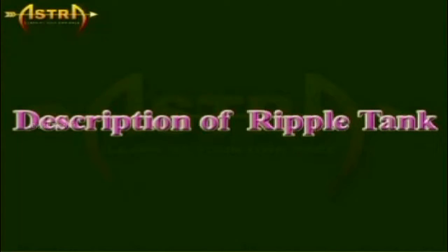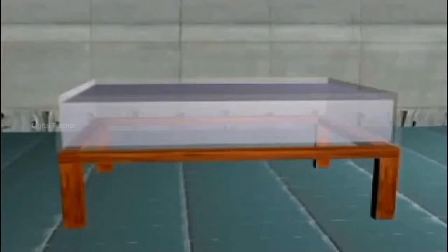Now let's see what a ripple tank is. A ripple tank essentially consists of a rectangular shaped trough made of transparent glass or perspex material. This tank contains water held at a height with support from four legs.